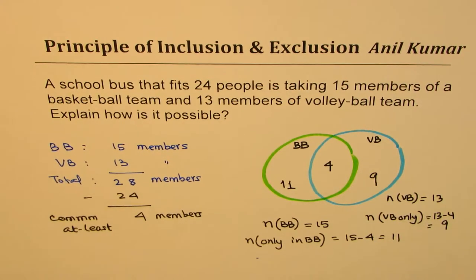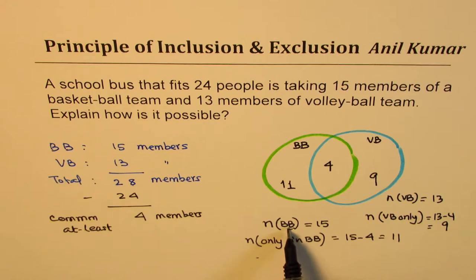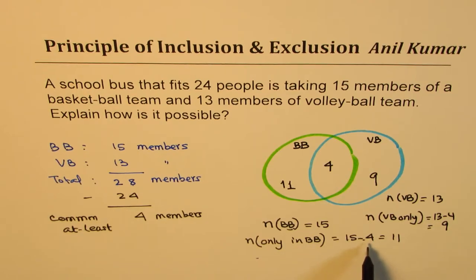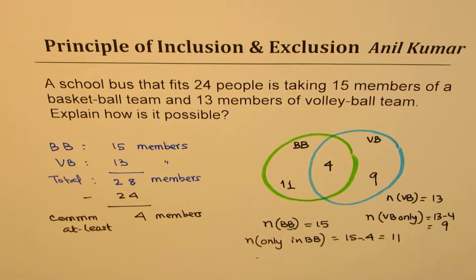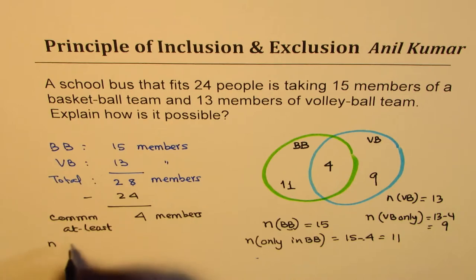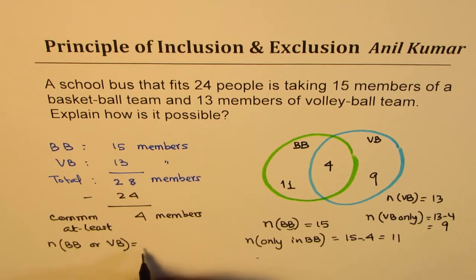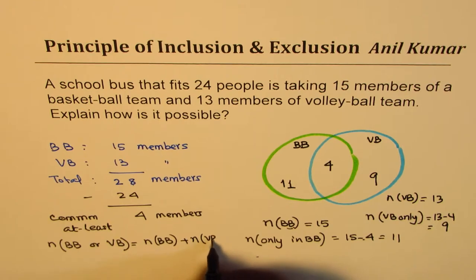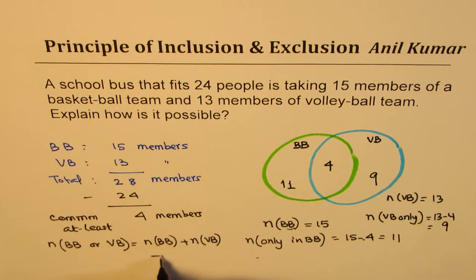I hope you have understood the whole process. We have used a few technical terms here. When I write N, that's the event — BB for basketball team. The number of members in the basketball team is 15, and only in basketball — not volleyball — will be 15 minus 4, as 4 are playing volleyball also. We really want to know how many persons are in the basketball team or volleyball team, which you get by adding both teams and taking away those in both teams.